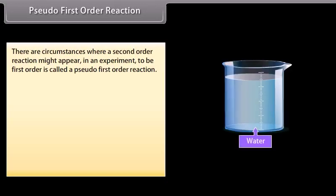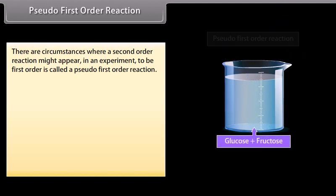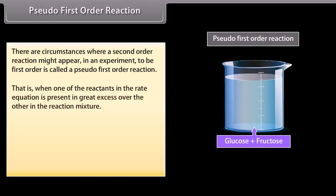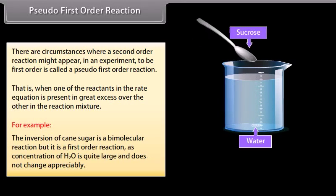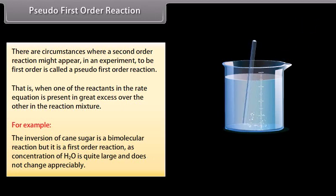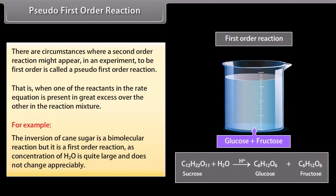There are circumstances where a second-order reaction might appear in an experiment to be first-order; this is called a pseudo-first-order reaction. This occurs when one of the reactants in the rate equation is present in great excess over the other in the reaction mixture. For example, the inversion of cane sugar is a bimolecular reaction, but it is a first-order reaction as the concentration of H₂O is quite large and does not change appreciably.